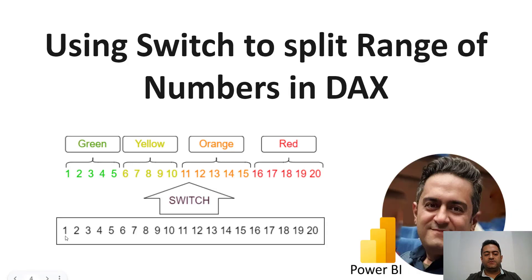We want to talk about how to split a range of numbers. For example, when the number is between 1 and 5, label it as green; when the number is between 6 and 10, label it as yellow, and so on. We want to split a range of numbers into four parts and color them in different colors. Note that all parts have the same length.